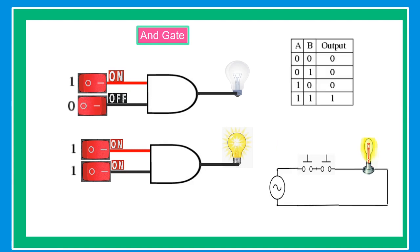AND gate. The AND gate gives an output of 1 if both inputs are 1. Otherwise, if one of the inputs is 0, it gives an output of 0.